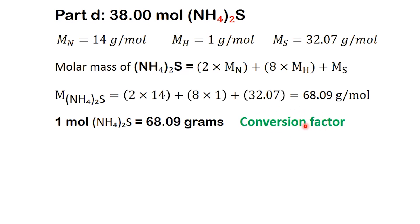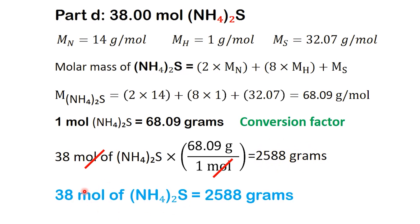So we set up our conversion so that moles cancel out and grams remain, just like we've done before. Here's the result: 38 moles of (NH4)2S equals 2,588 grams.